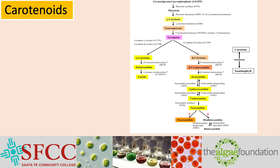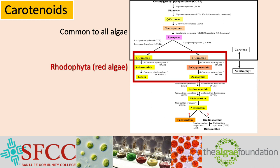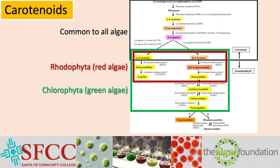This diagram shows the biochemical pathway to produce the carotenoids. The carotenoids are shown in colored boxes that approximate the color of the pigment, and in between each box is the name of the enzyme protein that converts one carotenoid to another. The carotene part of the pathway, shown in the black box, is common to all algae. The red algae only have the enzymes to make lutein and zeaxanthin. The green algae have the enzymes to convert zeaxanthin to antheraxanthin, violaxanthin, and neoxanthin.